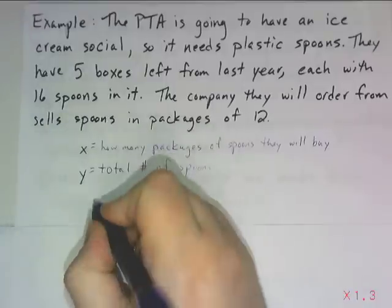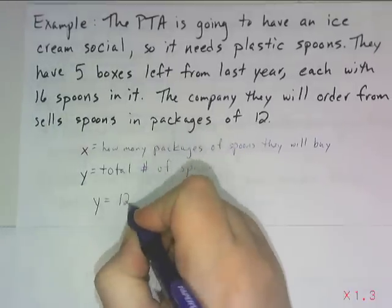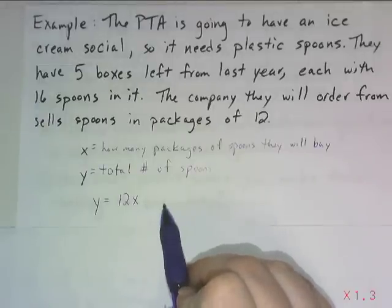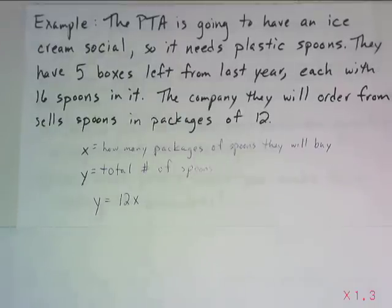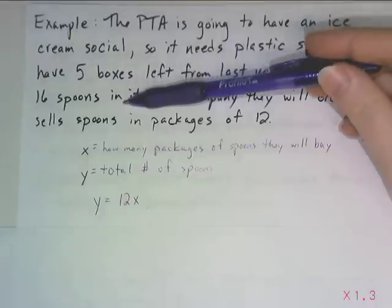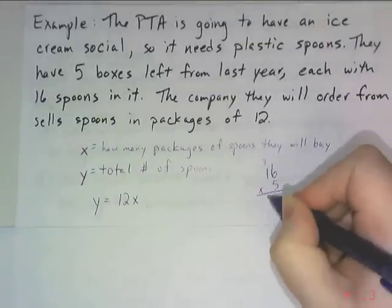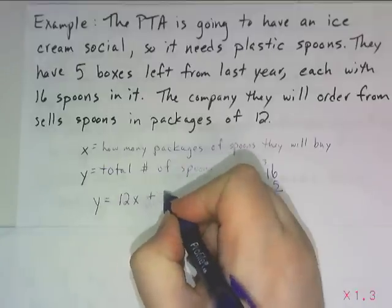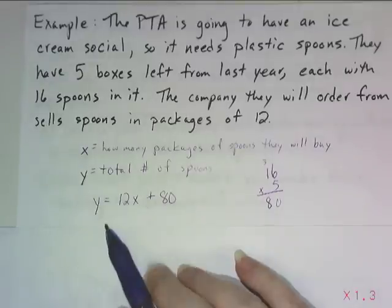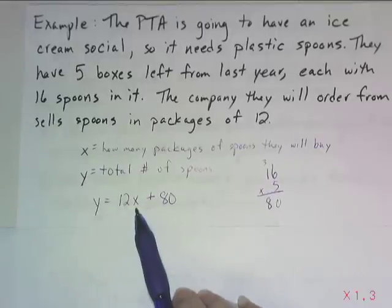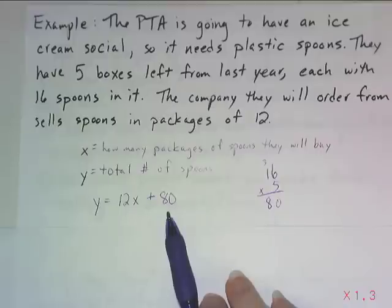So I know that y equals 12 times x. Now I need to figure out the constant — the y-intercept, the b value. Looking back at the problem: we start off with five boxes of spoons that each have 16 spoons, so I can do the math and find that we begin with 80 spoons. So 80 is my constant and my starting value. The equation is y equals 12x plus 80. The total number of spoons equals 12 times the number of packages they buy, plus the 80 we already had left over from last year.